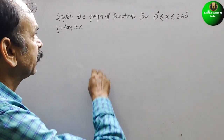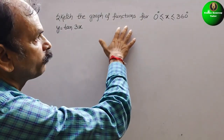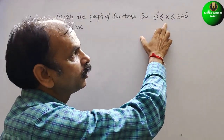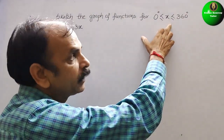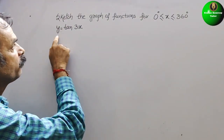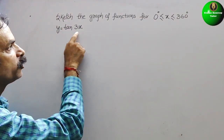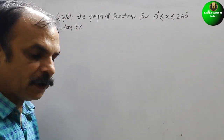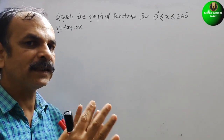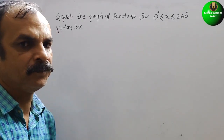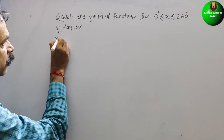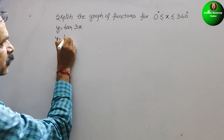The question is: sketch the graph of functions for 0° ≤ x ≤ 360°. They have given y = tan 3x. So first we will write what the standard form of tan is, that is y = tan x.